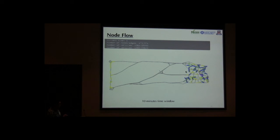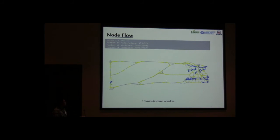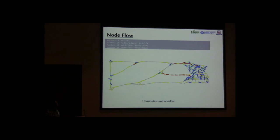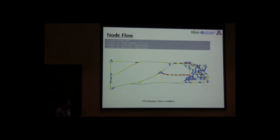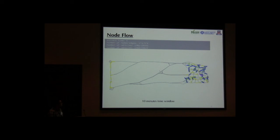Here is an animation showing how the blockage is identified. At the very beginning, the blockage didn't happen. However, it was identified after about 13 to 30 minutes. You can see the vehicles in the local region show divergence.